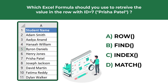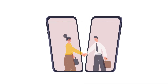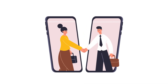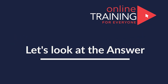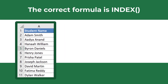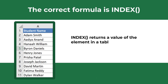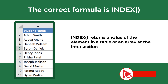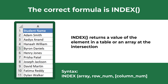Give yourself 10 to 20 seconds and see if you can pause the video to come up with the right solution. The correct formula is INDEX. INDEX returns the value of an element in a table or array selected by row and column number indexes. When entering the INDEX formula you need to provide the array and the row number; the column number is optional.